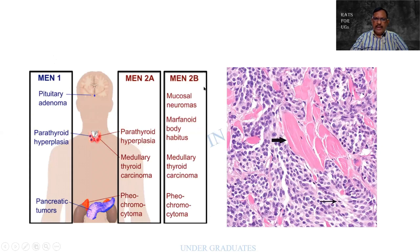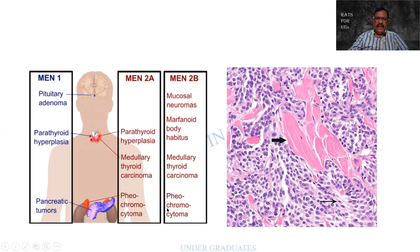Please memorize this tabular form. In MEN1: pituitary adenoma, parathyroid hyperplasia, and pancreatic tumors. In MEN2a: parathyroid hyperplasia, medullary carcinoma of the thyroid, and pheochromocytoma of the adrenals. In MEN2b (also called MEN3): mucosal neuromas, marfanoid build, medullary carcinoma of the thyroid, and pheochromocytoma. Remember the mnemonic — one P and two M's for 2b.